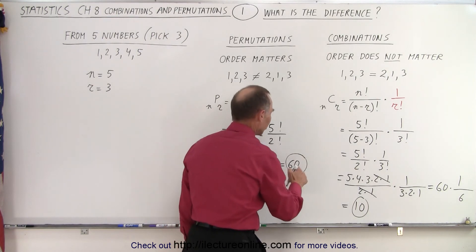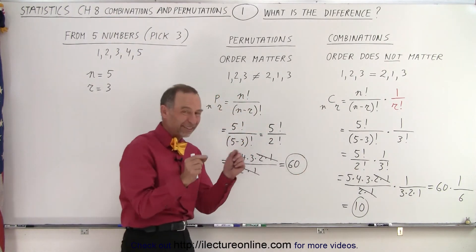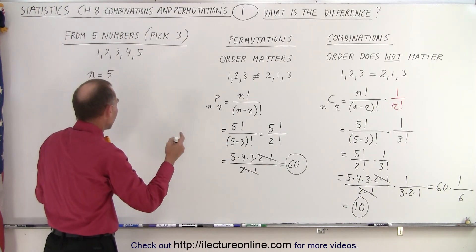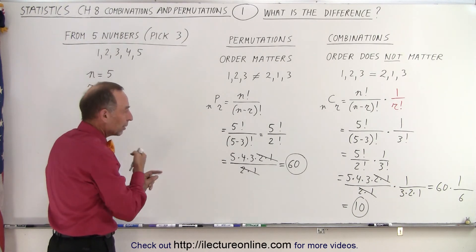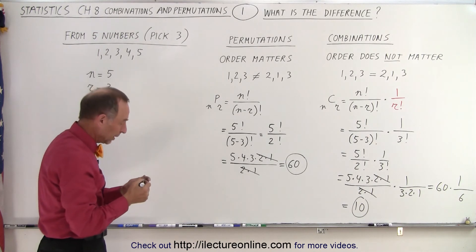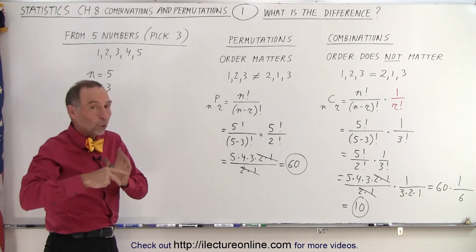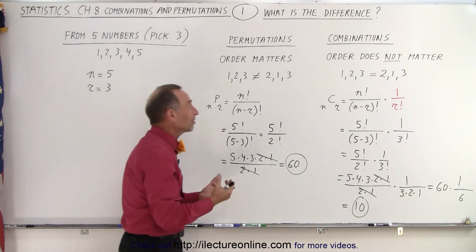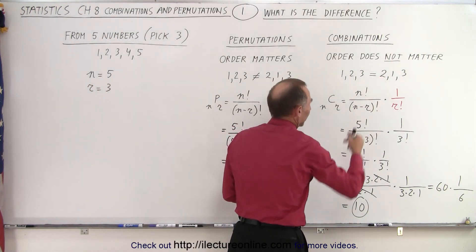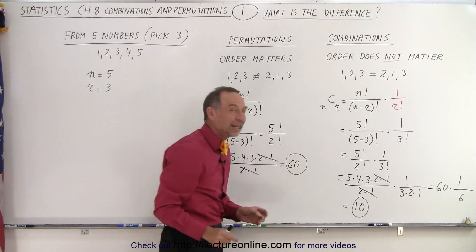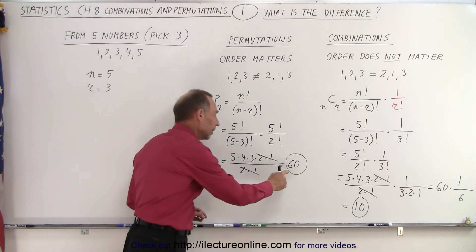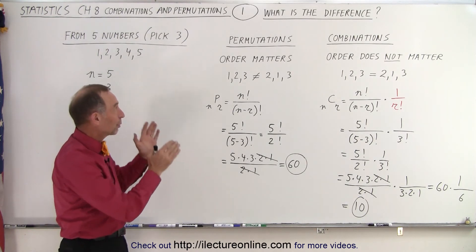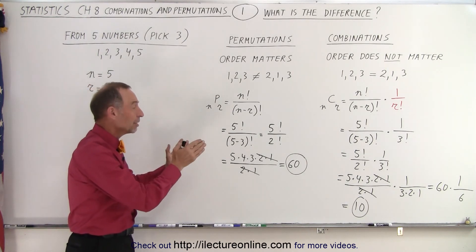So here you can see that there are 60 permutations — 60 different ways in which I can take the three numbers I pull out of a bag of five numbers and arrange those three numbers if I draw them at random. But if it doesn't matter what order they appear in and I pick out three numbers, how many different ways can I pick three numbers regardless of order? There are only 10 different combinations. There are 60 different permutations. That's how you can tell the difference between permutations and combinations.